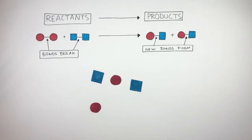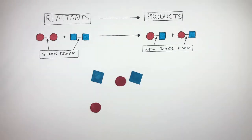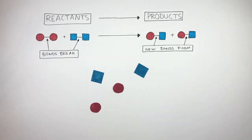Now these two particles are moving towards each other, but because they do not have enough energy, there is no successful collision. Particles must have enough energy for a successful collision to take place. And this is the activation energy.